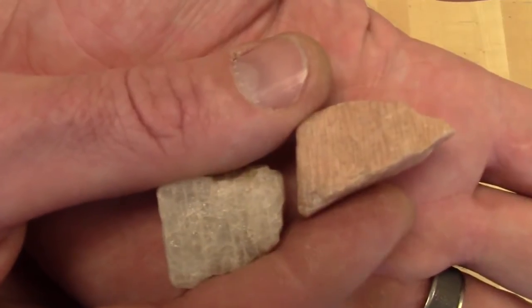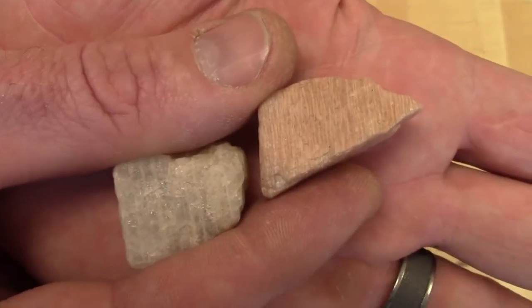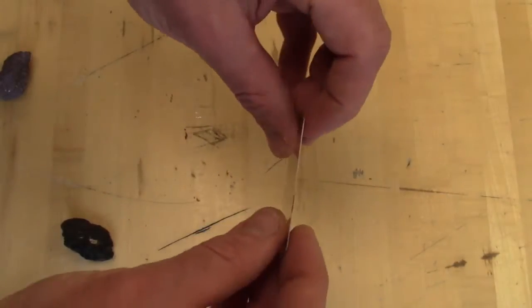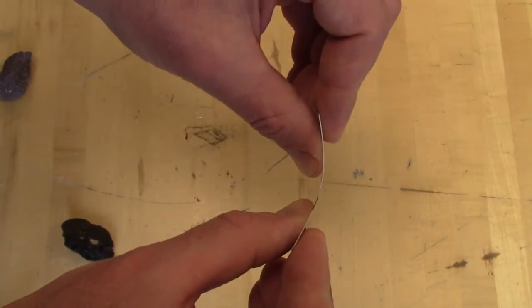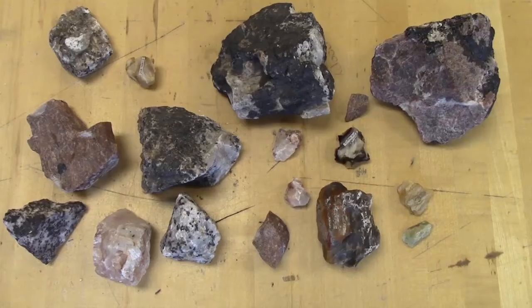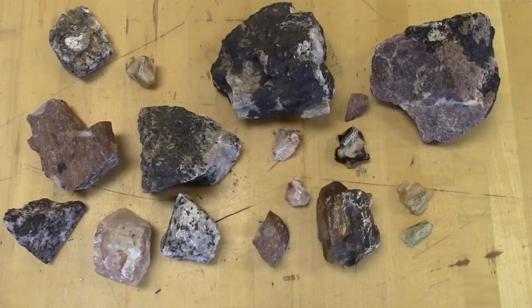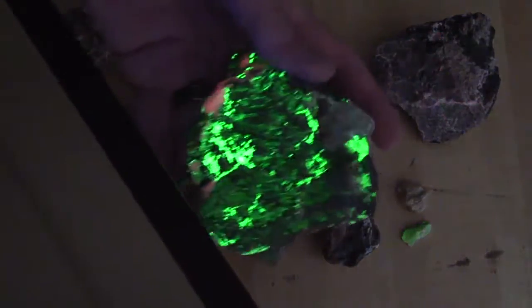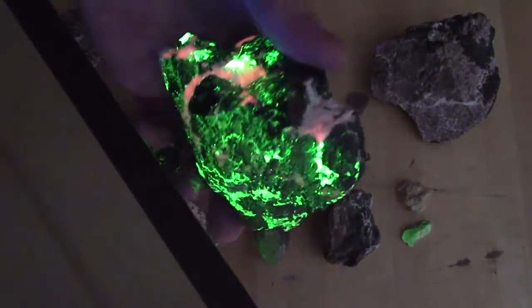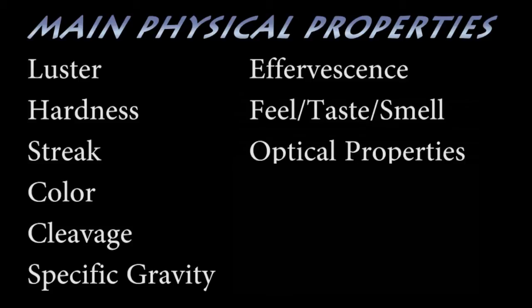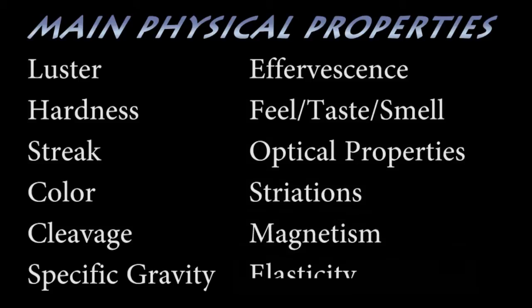The feldspars display parallel lines called striations, magnetite is magnetic, and the micas are elastic. Some minerals are radioactive, or triboluminescent, that is, they spark or glow when crushed. One of my favorite physical properties is fluorescence. I love taking my portable shortwave UV out in the field to find fluorescent minerals, and, well, the exoskeletons of many scorpions will fluoresce a bright green.